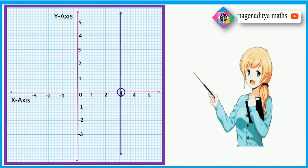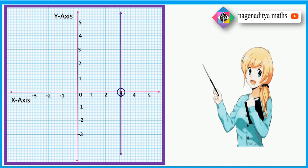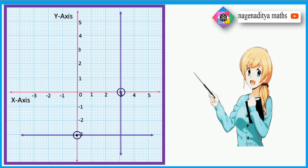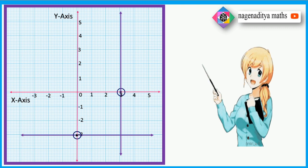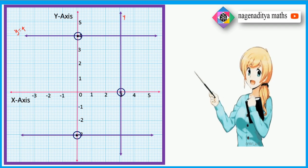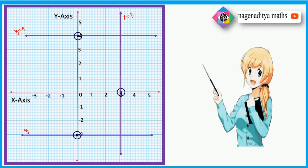Next, y plus 3 is equal to 0, which implies y is equal to minus 3. So y equals minus 3 is marked here, and we draw a line parallel to the x-axis. After that, y is equal to 4. So y equals 4 is here, and we put a point and draw a parallel line. This represents x equals 3, and y plus 3 equals 0 on the Cartesian plane.